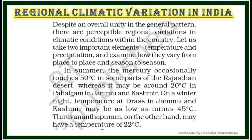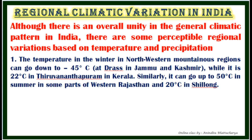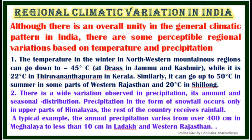Although there is an overall unity in the general climatic pattern in India, there are some perceptible regional variations based on temperature and precipitation. For example, the temperature in winter in the northwestern mountains can go down to minus 45 degrees centigrade in areas like Drass in Jammu and Kashmir, while it is 22 degrees centigrade in Thiruvananthapuram in Kerala. Similarly, it can go up to 50 degrees centigrade in summer in some parts of western Rajasthan.